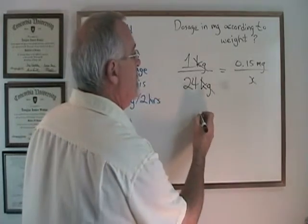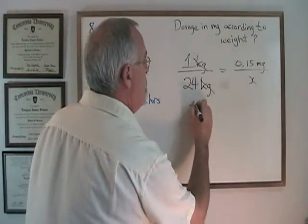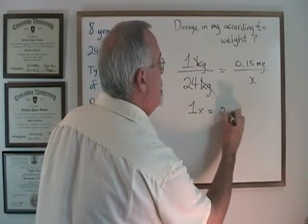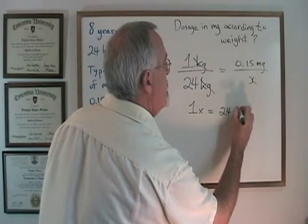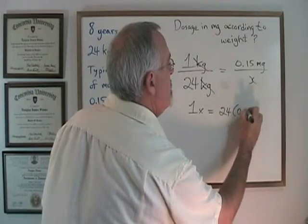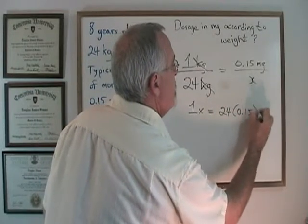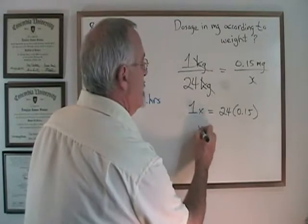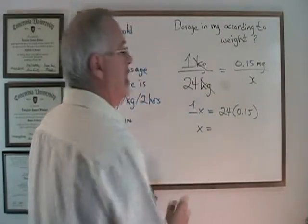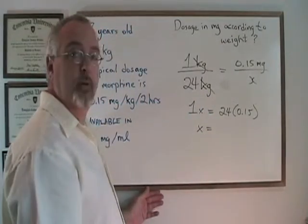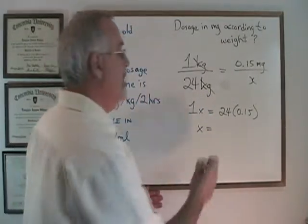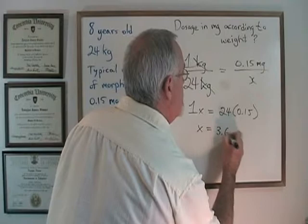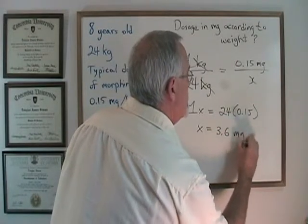Cross-multiplying: 1x equals 24 times 0.15. x is therefore equal to 24 times 0.15, which is 3.6 milligrams.